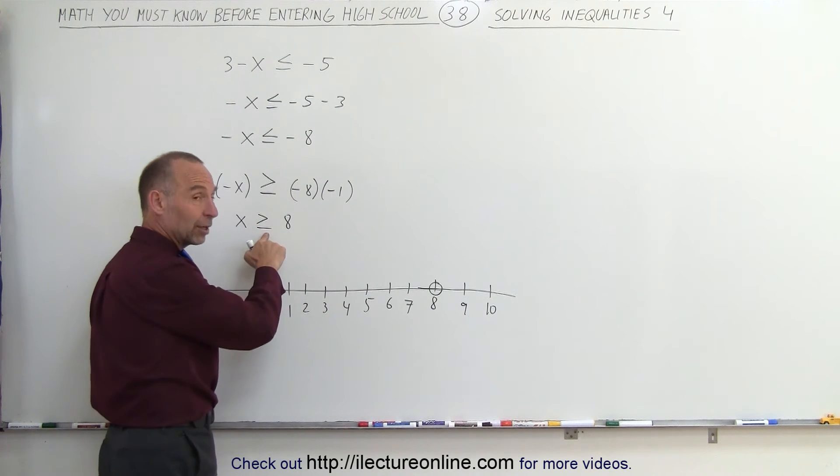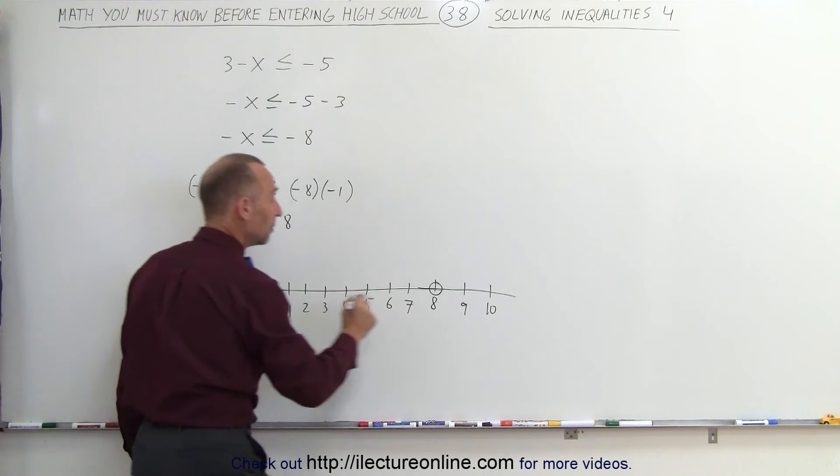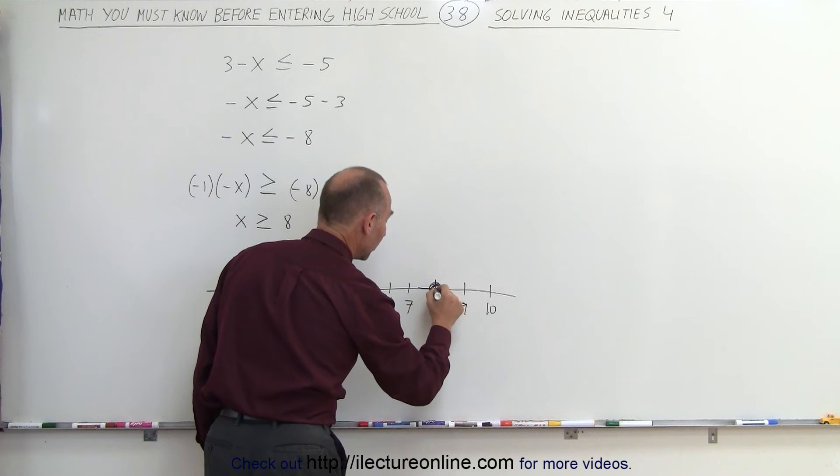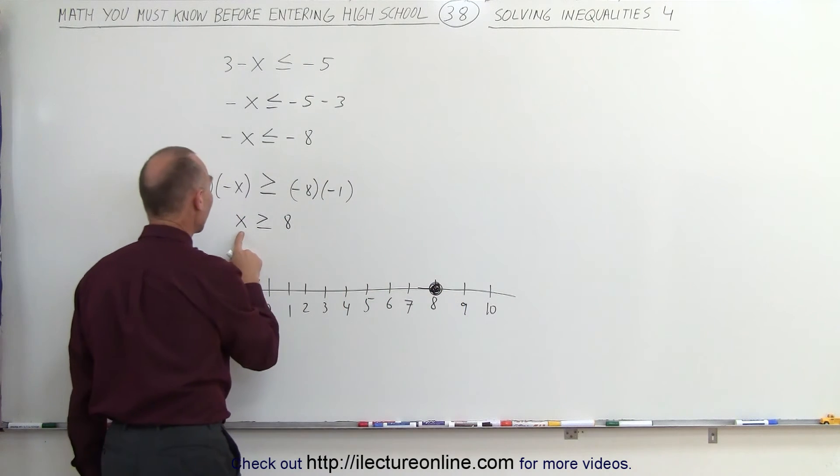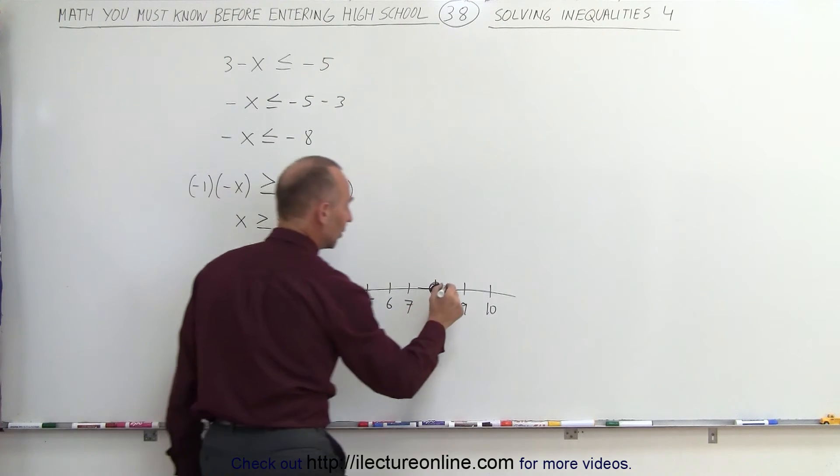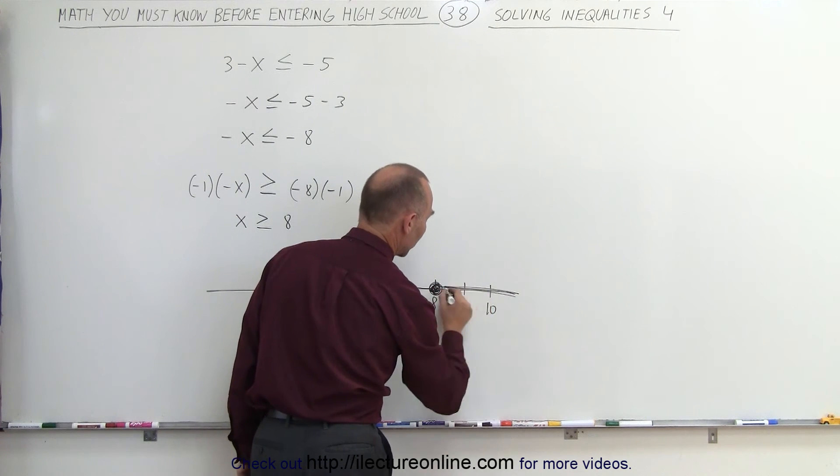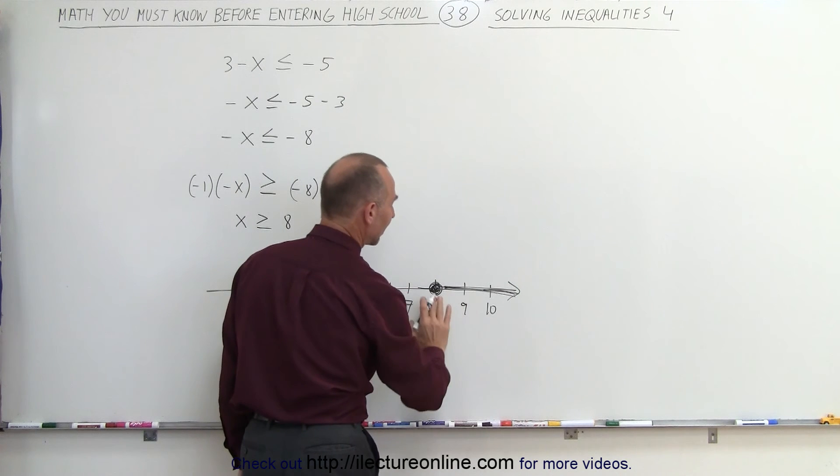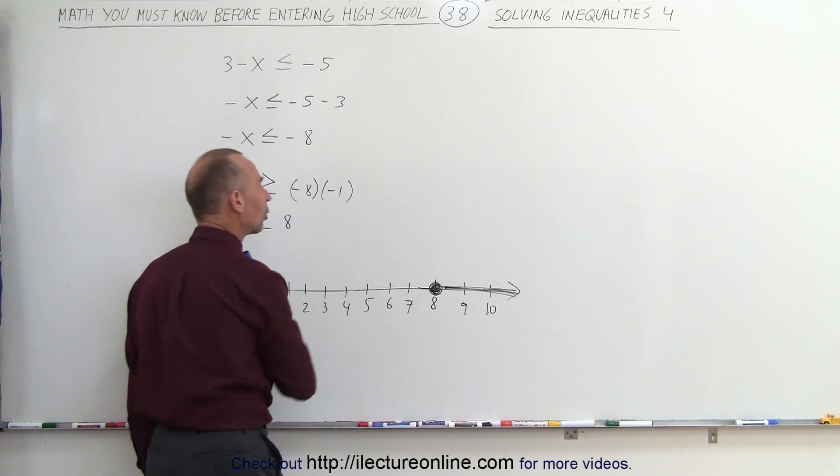Now we darken the circle because it says equal to, that means it includes that point. And it says that all values greater than or equal to, so anything to the right of 8. So we draw a thicker line this way with an arrow, which means that all the numbers to the right of 8, including 8, satisfy the inequality.